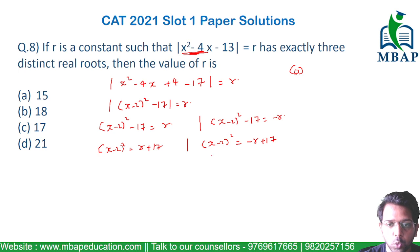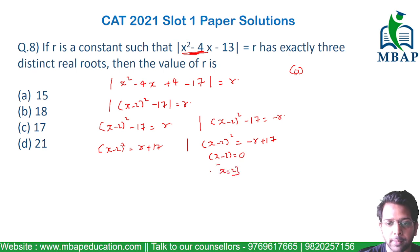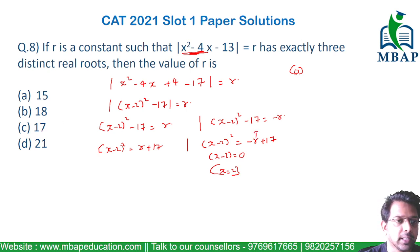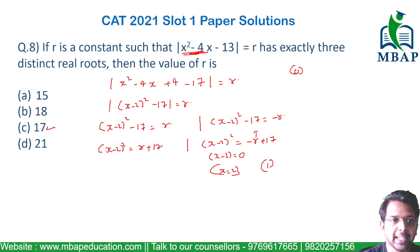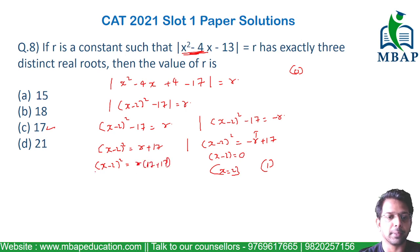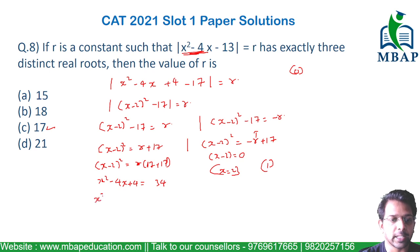This is possible only if (x - 2) = 0, i.e., x = 2. So there is only one value of x as a root of this equation when (x - 2)² = 0, which happens when r = 17. Now on the left-hand side equation: (x - 2)² = r + 17 = 17 + 17 = 34, so x² - 4x + 4 = 34, meaning x² - 4x - 30 = 0.